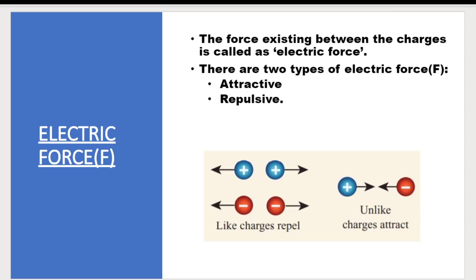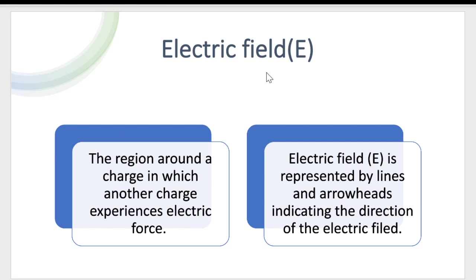Now we will discuss the electric field. Electric field is denoted by capital E. The definition is: the region around a charge in which another charge experiences electric force. Either it is a positive charge or a negative charge, there will be a region around it.